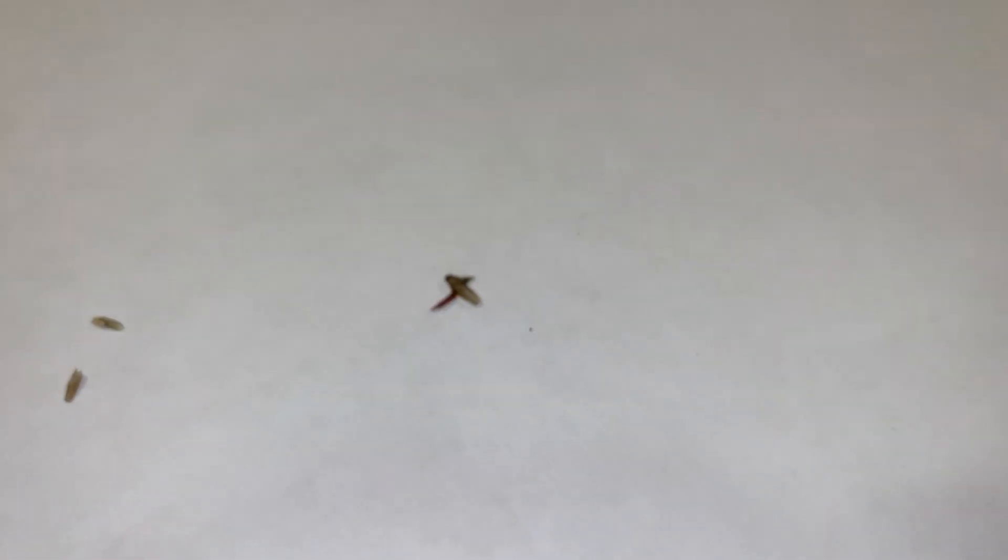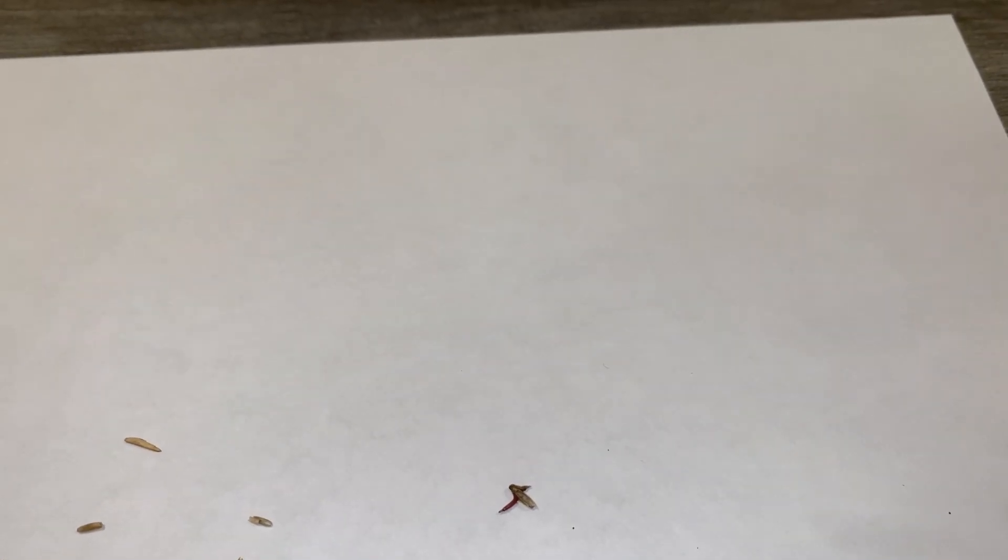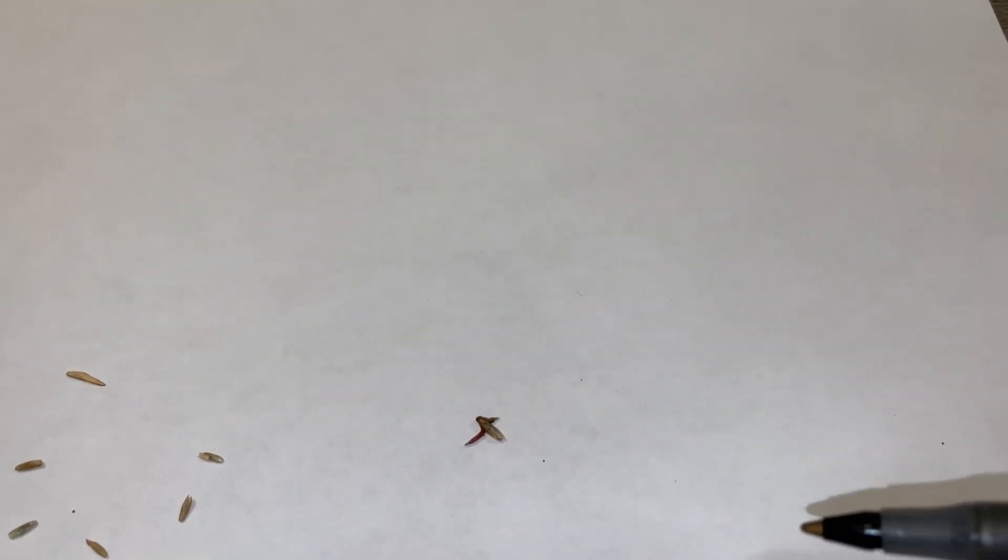So this seed, we overseeded our front lawn here at the shop five days ago and it's fall. Nighttime temperatures are in the 50s, daytime in the low 80s. So this seed has germinated five days later.